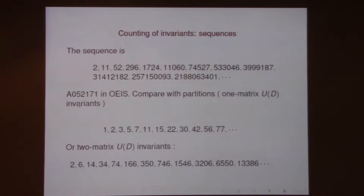This sequence grows a lot faster than counting partitions. As expected, you've reduced the symmetry from U(D) to S(D), so the invariants have increased. And upon a rough inspection, these numbers seem to grow about as fast as three-index tensor invariants. That's another kind of invariant theory problem, and it would be nice to estimate exactly how fast this is growing.